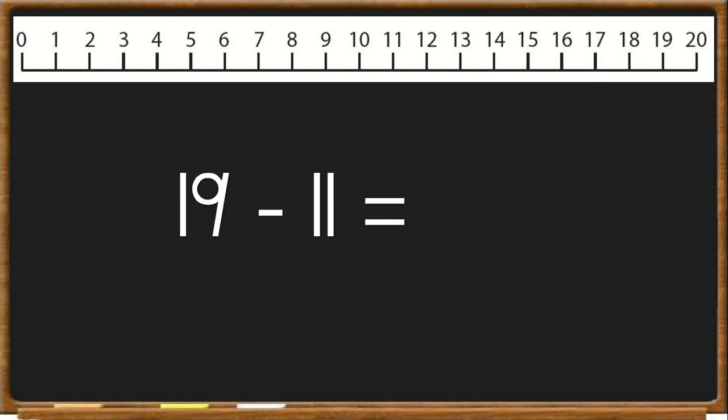So the next one we're going to do is 19 take away 11. So I put my finger on number 19. And now remember when we add, we move this way. And when we subtract, we move this way. So add, when there's a plus, we jump to the right. And when we subtract, we jump to the left. So now I'm going to subtract. So I'm going to jump 11 times to the left. So let's count. 1, 2, 3, 4, 5, 6, 7, 8, 9, 10, 11. So 19 take away 11, 11 leaves us with 8. So again, remember when we add, we jump to the right. And when we subtract, we jump to the left.